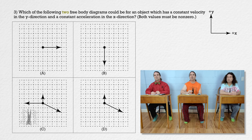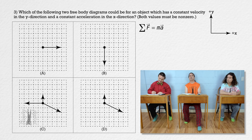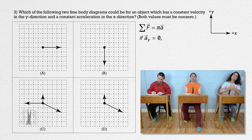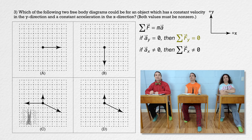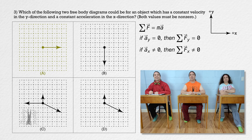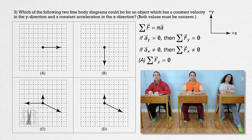Bobby, please solve this problem. Because net force equals mass times acceleration, to have a constant velocity in the y direction the net force in the y direction must be zero, and to have a constant acceleration in the x direction the net force in the x direction must be non-zero. So we're looking for a free body diagram showing zero net force in the y direction and a non-zero net force in the x direction. Choice A has only one force in the positive x direction, giving zero net force in y and a non-zero net force in x — so choice A is one of the two correct answers.